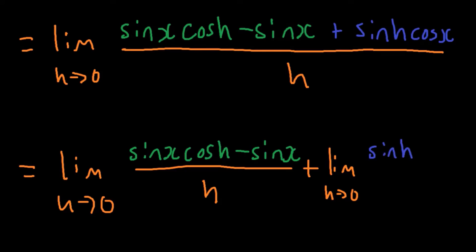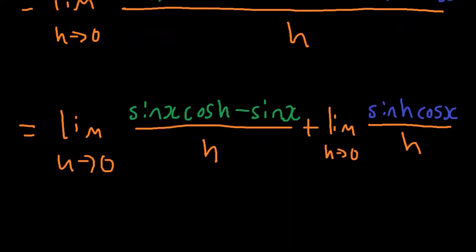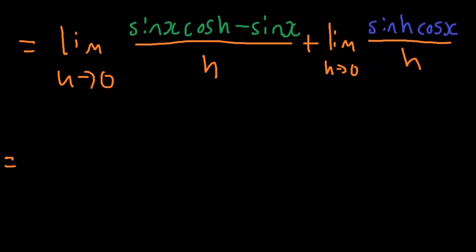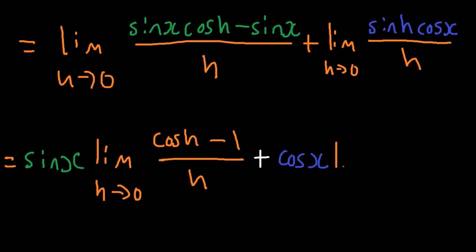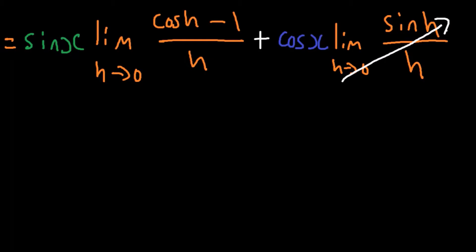Next, we can factor out the terms that don't have an h for each limit since their limits are unchanged by h approaching zero. So now the limit currently states sine x times the limit as h approaches zero of cos h minus one over h plus cos x times the limit as h approaches zero for sine h over h. We already know that the limit on the right evaluates to one in the essential trick limit video. But let's take a look at the limit on the left separately.